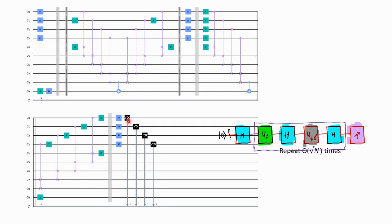After it is repeated four times, we measure — we measure all four bits q0, q1, q2, q3. These arrows shown here are basically measuring the quantum state into the classical register, so from the quantum bit value you store it in the classical bit so that we can read and understand what it is.